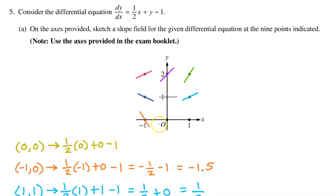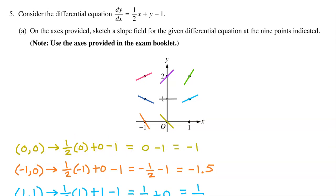At the point (0, 0), we have one-half times 0 plus 0 minus 1. This equals negative 1, so draw a decreasing slope at a 45-degree angle.